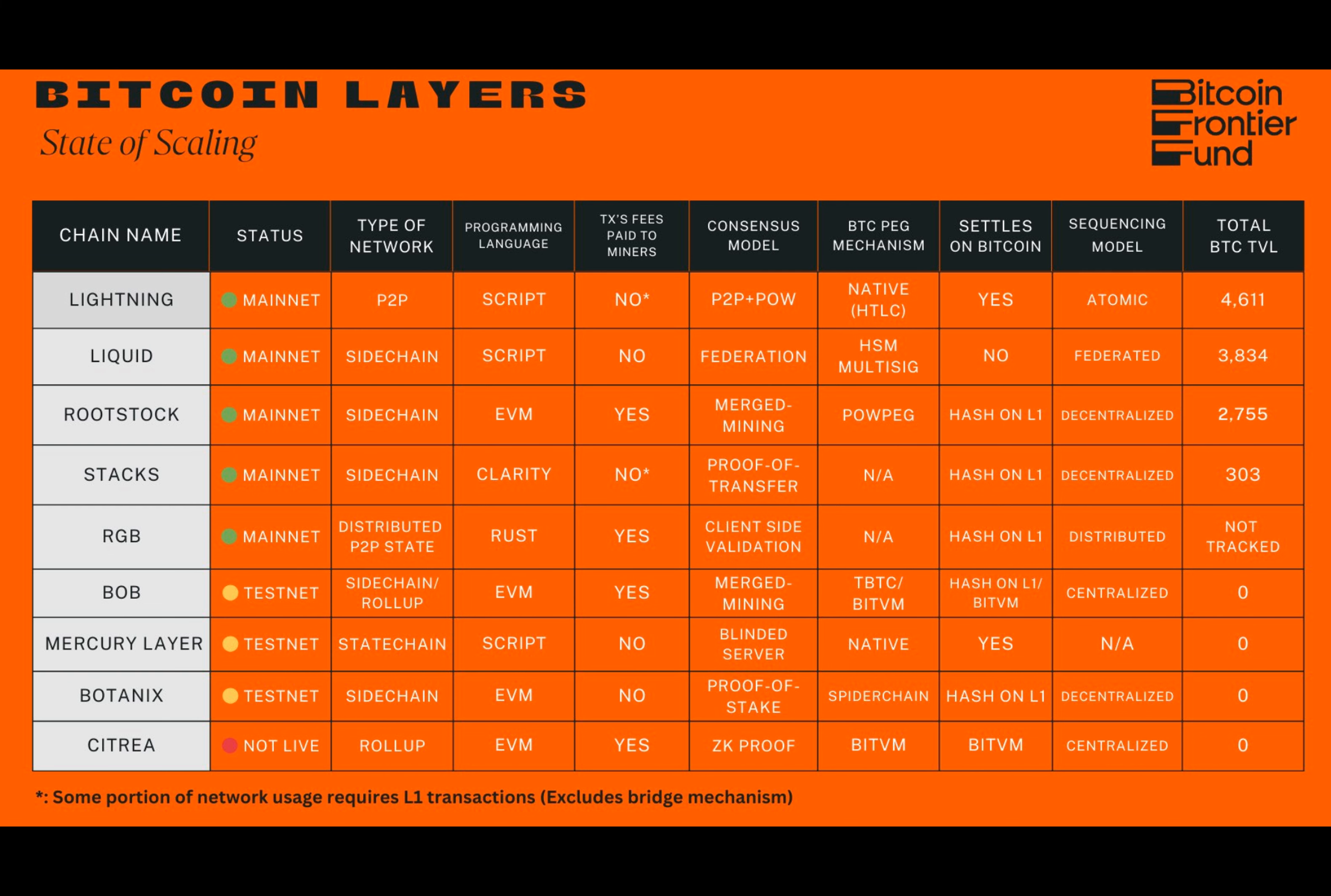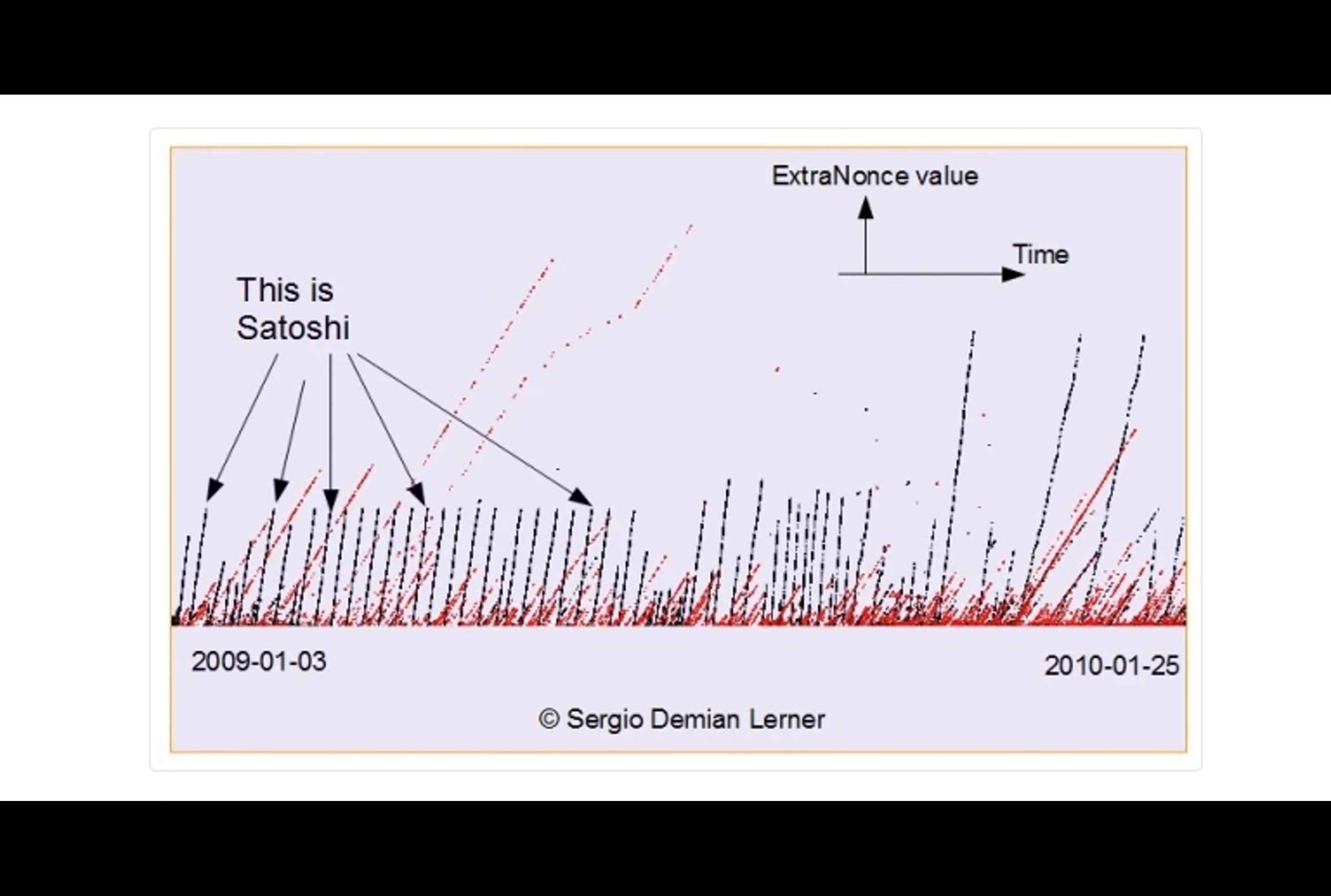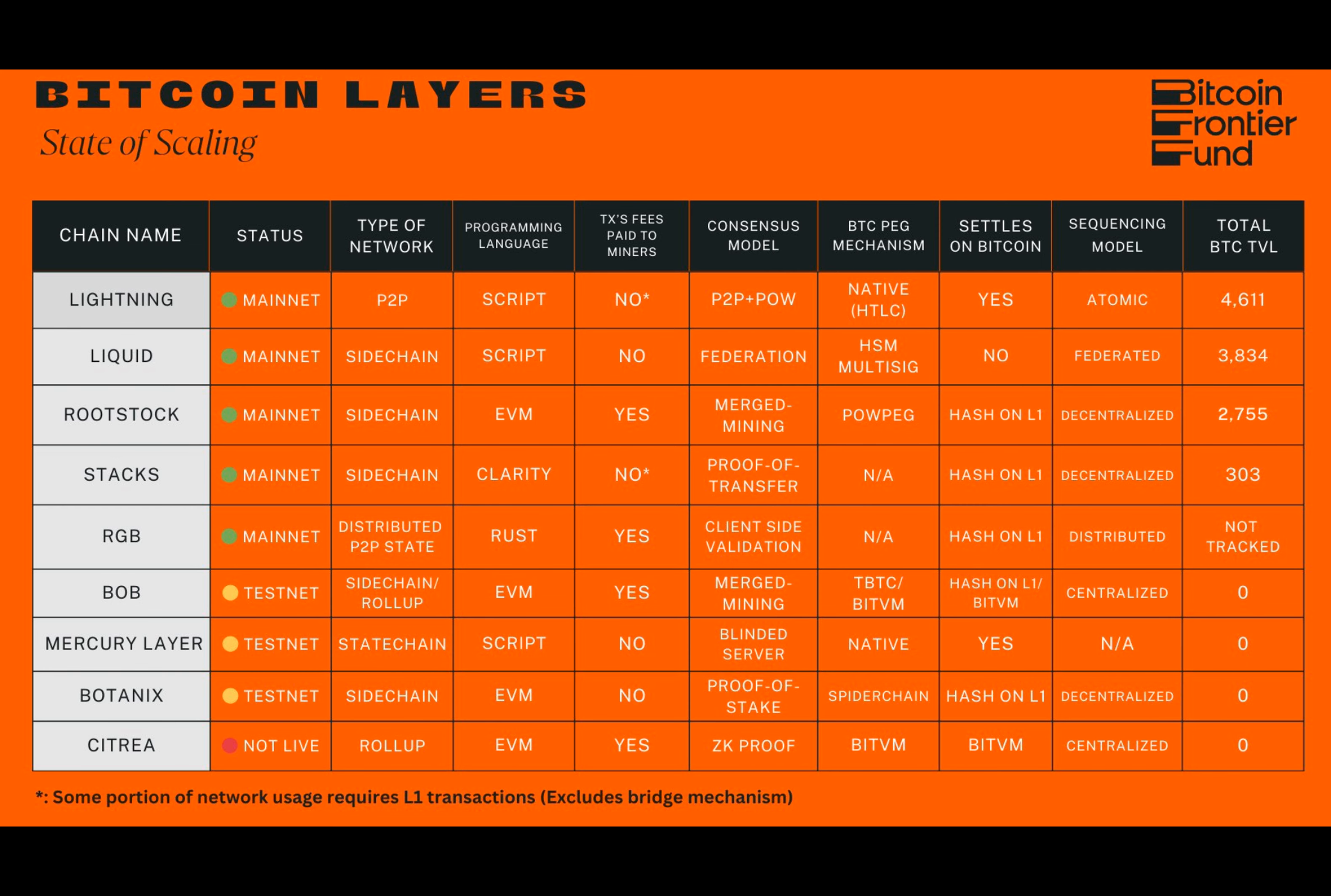The BitVMX project openly credits the foundational work of Robin Linus' BitVM framework. It looks to build on the theoretical approach of BitVM, which uses a complex combinatorial logic circuit approach, relying on large Merkle trees for gate-level verification.